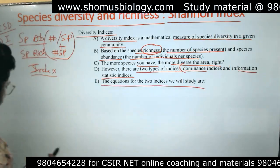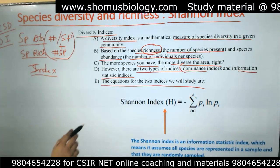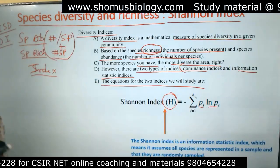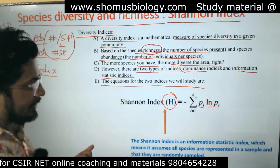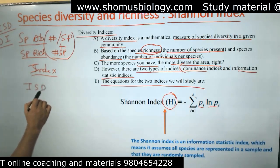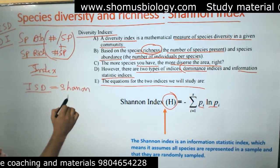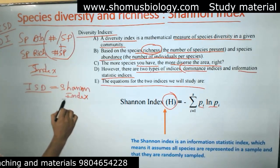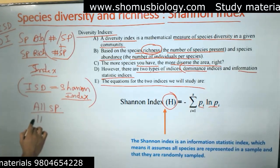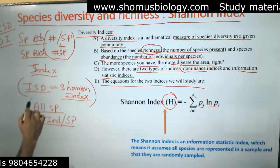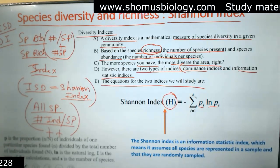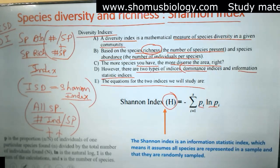The Shannon index is denoted as capital H, and equals the sum of Pi times the natural log of Pi: H = Σ(Pi × ln Pi). The Shannon index is an index of informational statistics. It accounts for all species and the number of individuals belonging to each species.